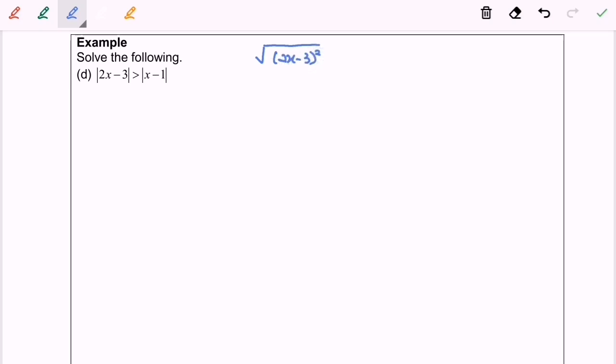For the definition of the modulus, greater than another square root, we have x minus 1 square. So in order to eliminate the square root, we are going to square both sides.